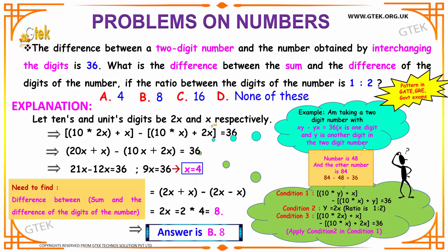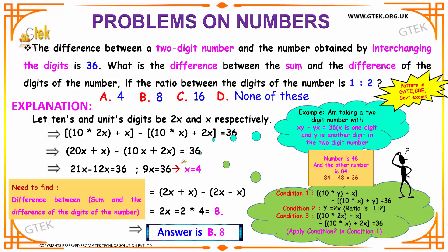Hence, our units digit is 4. Now we need to find the difference between the sum and the difference of the digits. The sum of the two digits is 2X + X = 3X, and the difference is 2X − X = X. The difference between the sum and the difference is (3X − X) = 2X. Substituting X = 4, we get 2×4 = 8. So the answer is 8, which is option B.